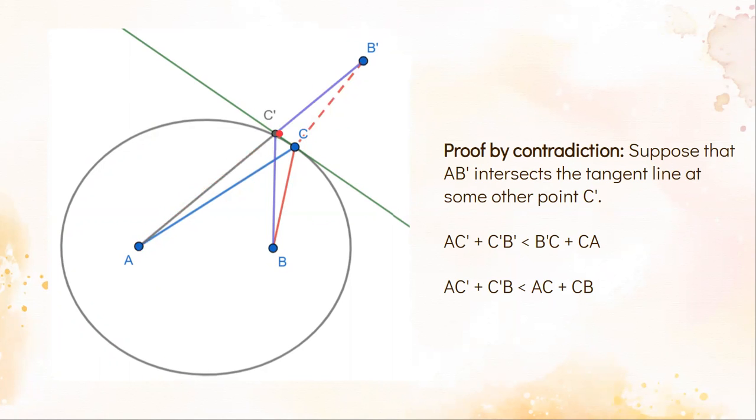Now we can notice that the purple lengths are equal and the red lengths are equal. This is because B' is the mirror image of B, and so everything is symmetric on either side of the green line. This means that we can replace C'B with C'B' and B'C with BC. Our new inequality is AC' plus C'B' is less than AC plus CB.